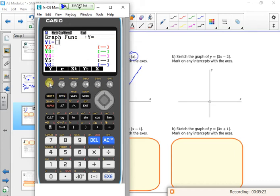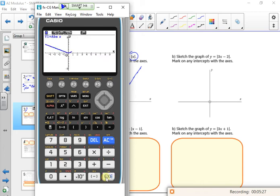I'll just do the modulus graph straight off. So option numeric abs with an x. There, a v-shape graph.